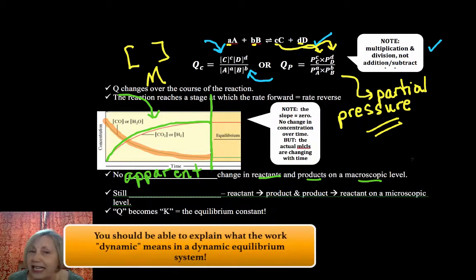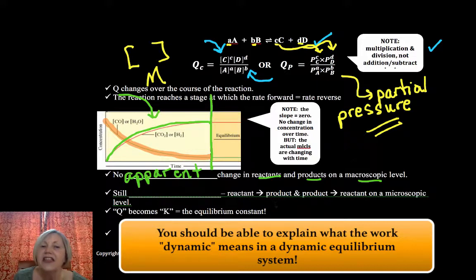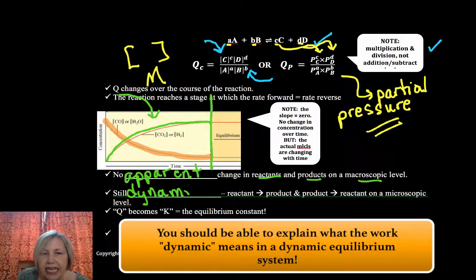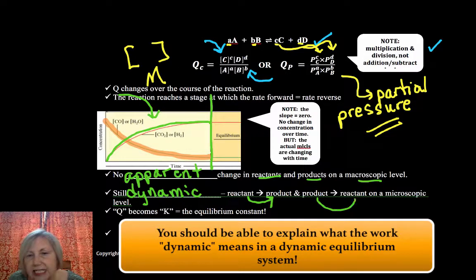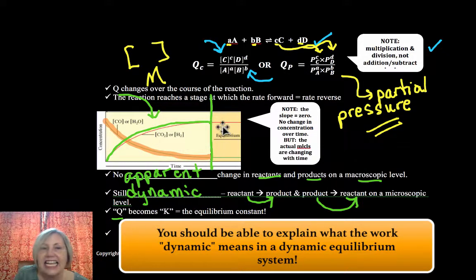In reactants and products, if we were looking at our visual macroscopic level, in other words, colors would reach a stable point and quit changing. But what we find is on the microscopic level, this is still dynamic. There is still good stuff going on. Reactant is still proceeding to make product, but because it's reversible product is beginning to form reactant and Q becomes a constant K.